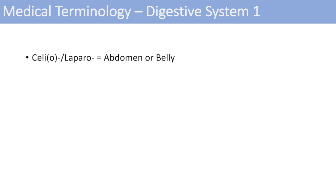The next system is the digestive system — there's a lot of anatomical medical terminology here, so take notes. The first one is celio or lapro, which denotes the abdomen or belly. Think of celiac disease or laparoscopic surgery — those just denote something involving the abdomen. The next one is gastro, denoting the stomach, so gastritis is inflammation of the stomach.